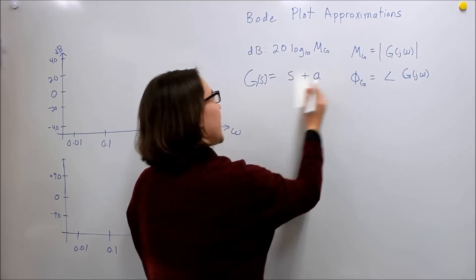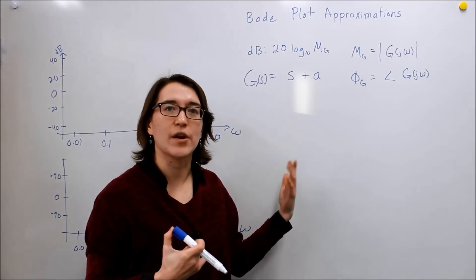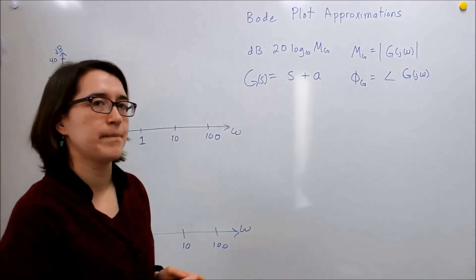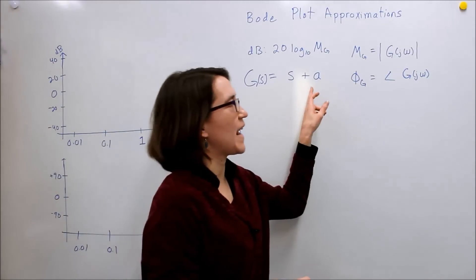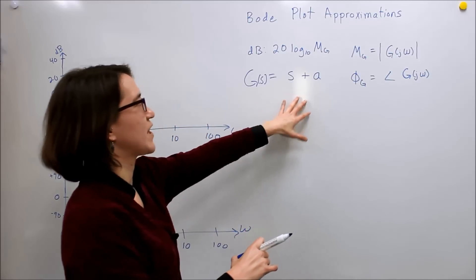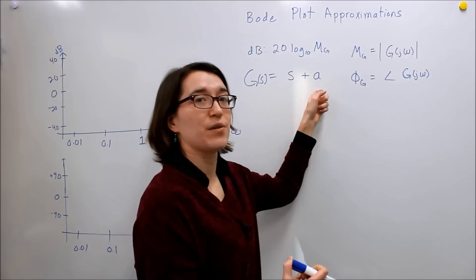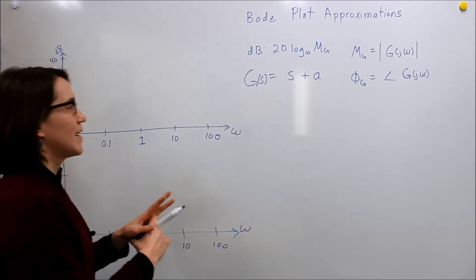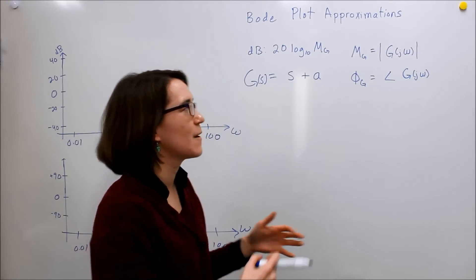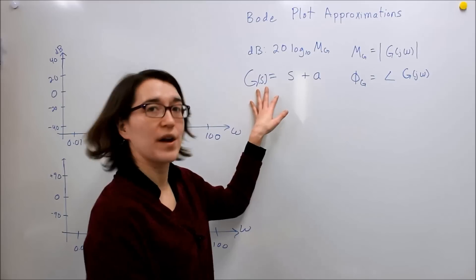What happens when we have s plus some constant a? This is a common zero that we're going to see in our function. So what does that look like on its own on a Bode plot? We're using the generic a, not a specific value, so this will have a general way to plot the Bode plot with any value of a here. Instead of going through and making that table every single time, which can be tedious, we're going to look at some quick ways to approximate this Bode plot of this function.